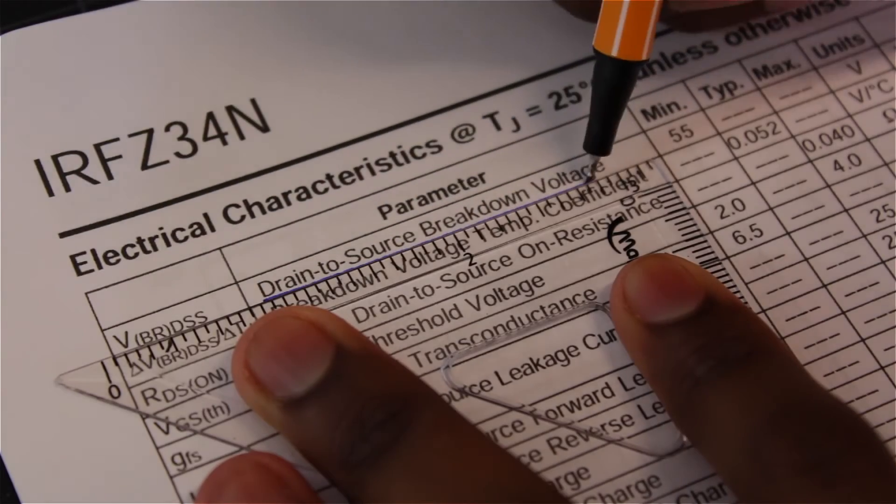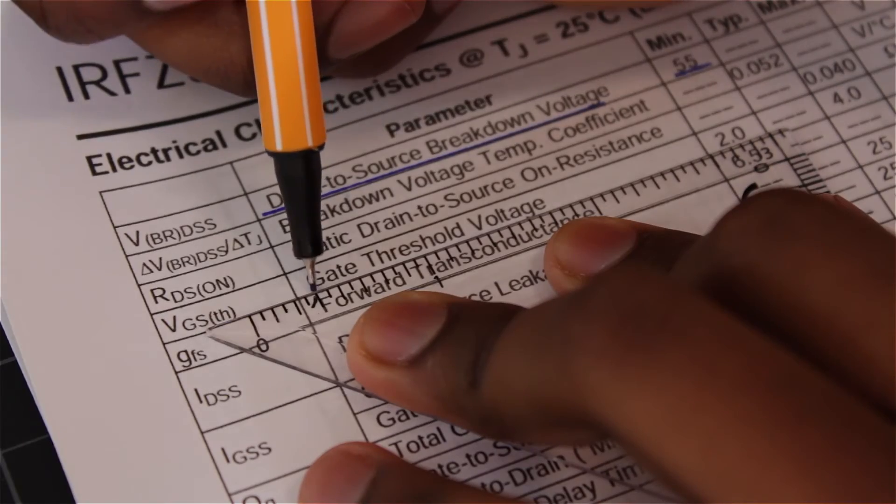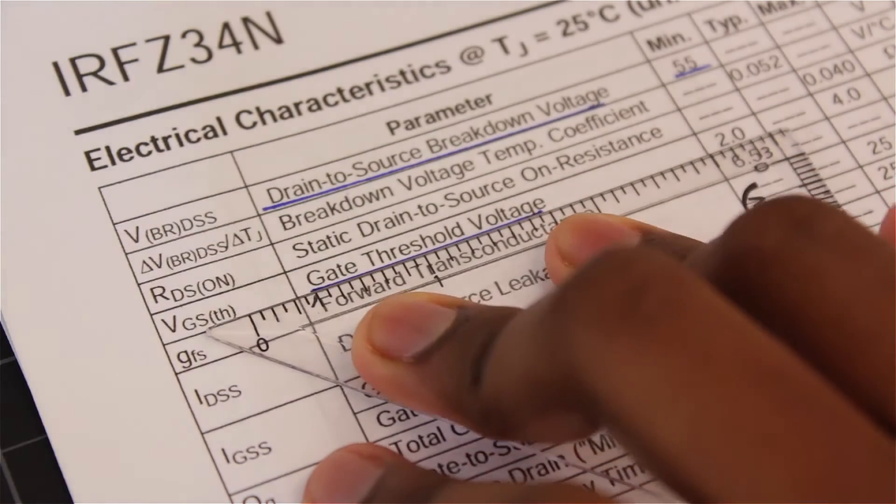The breakdown voltage tells us the maximum voltage that this transistor can handle. The gate threshold value is the minimum voltage to turn the transistor into the on state.